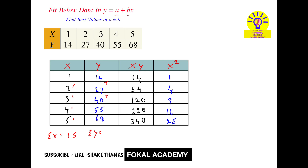The sum of all xy values gives 748. And the sum of all x-square values — sigma of x-square — gives 55.